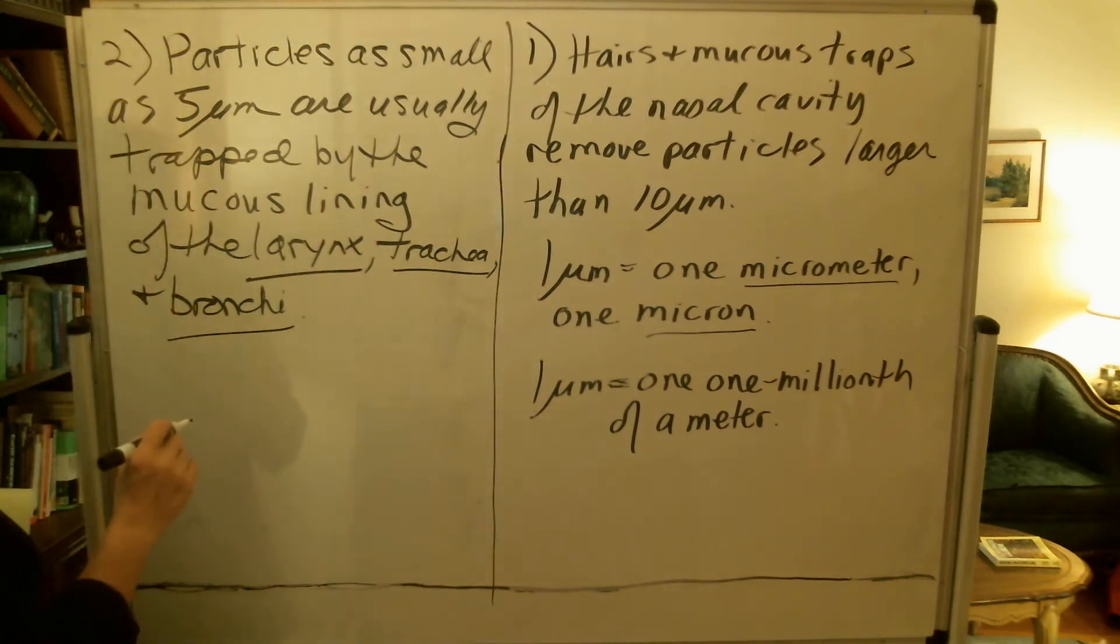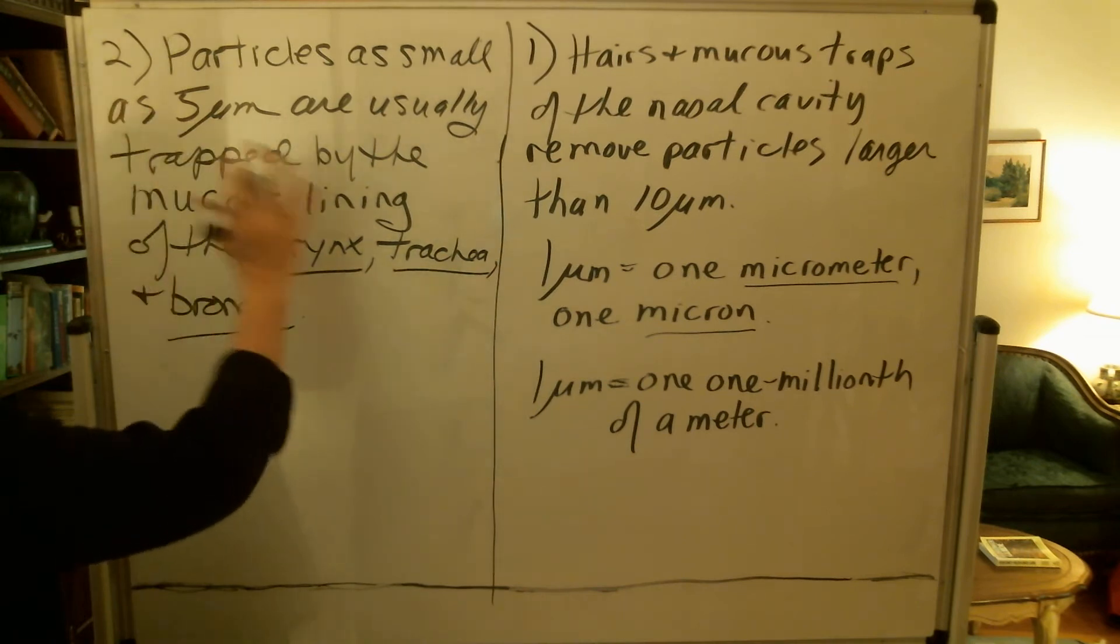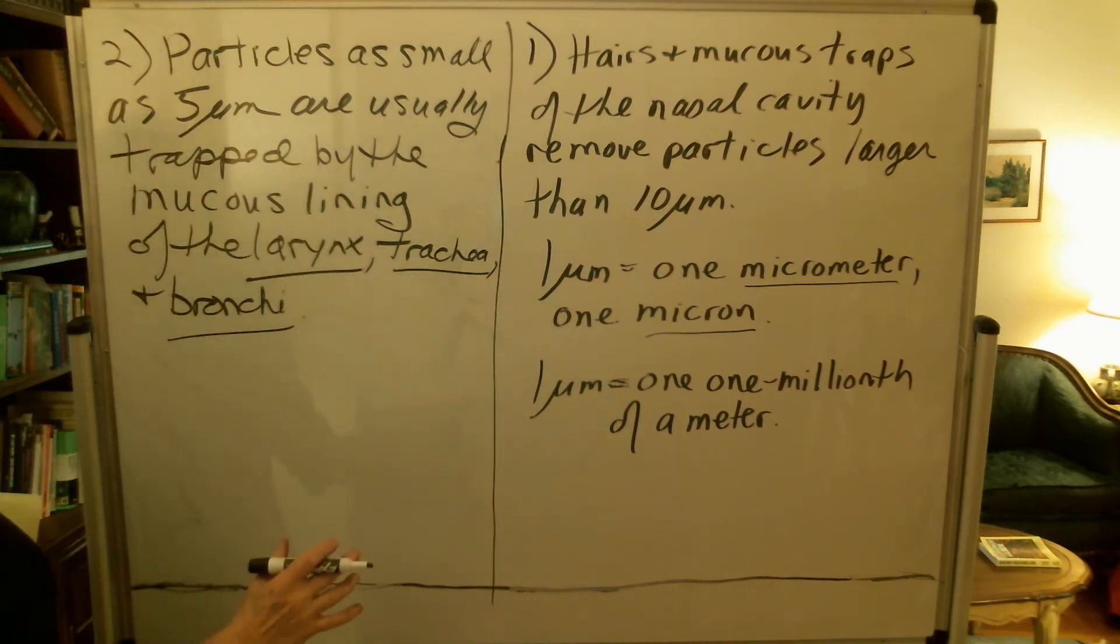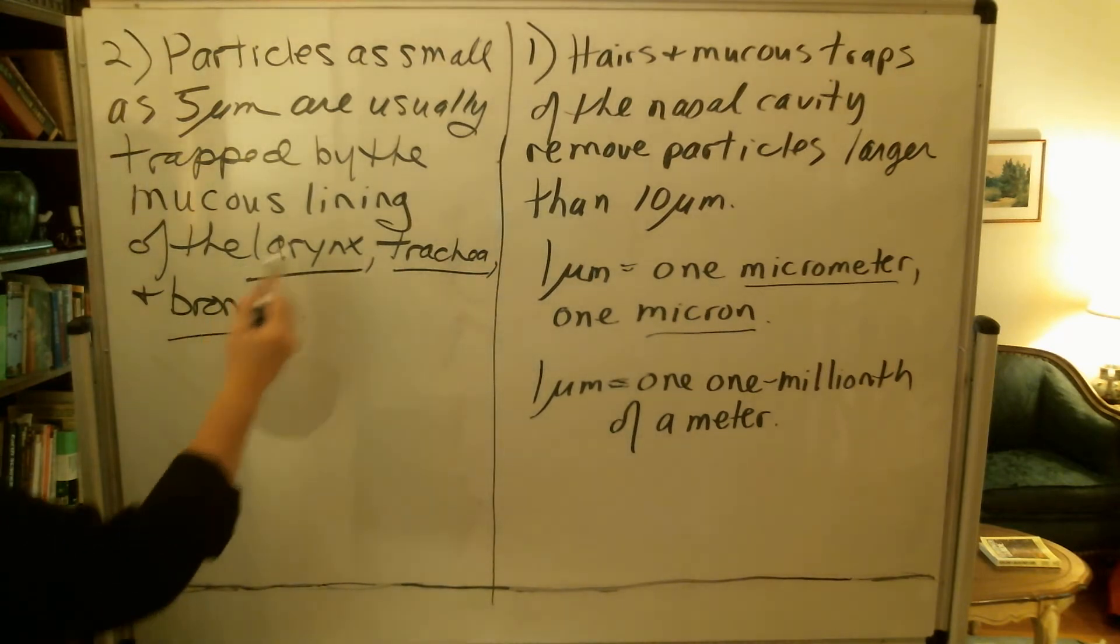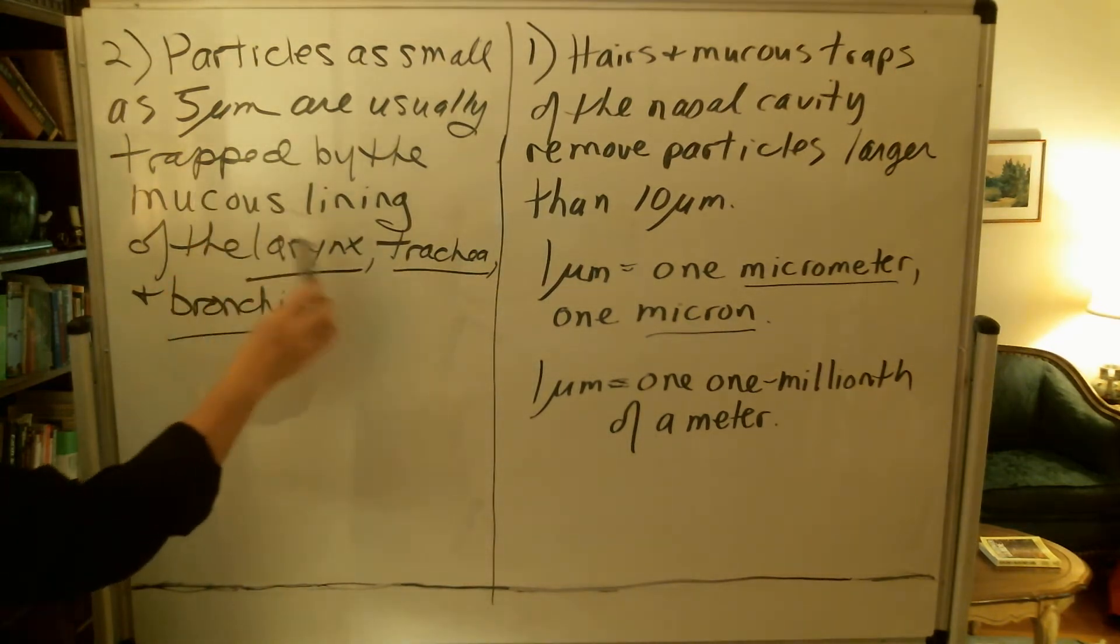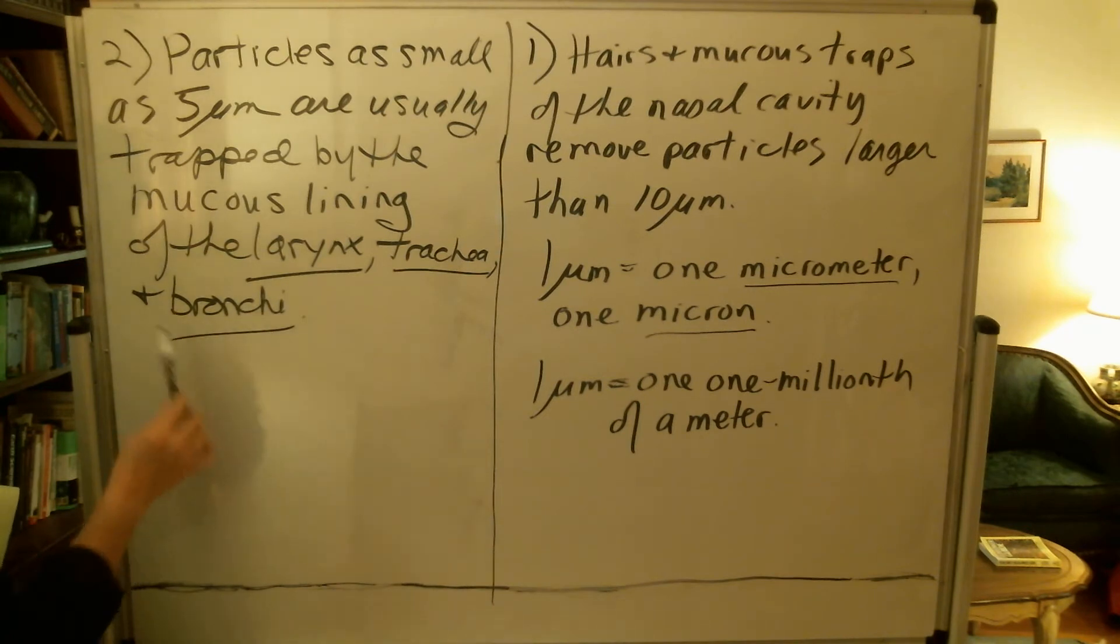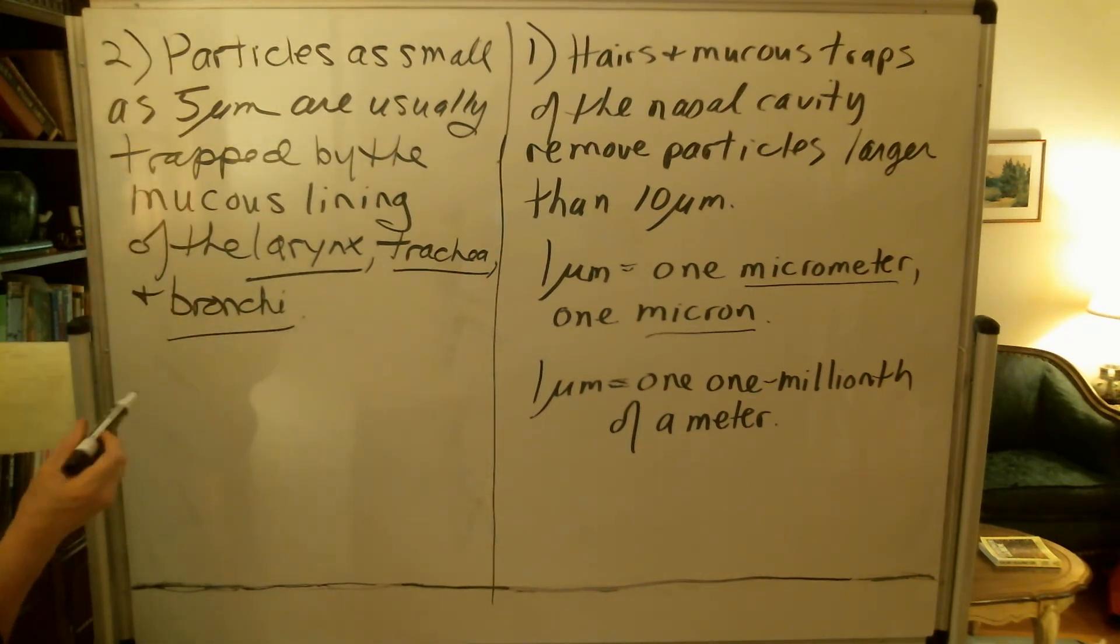So as I said, when you get down to five microns, a lot of those and anything larger as well will be taken out still in the upper respiratory tract and the beginnings of the lower respiratory tract, simply by the mucus that we have there.